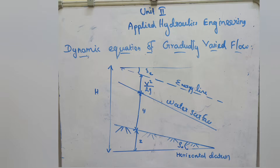The flow direction is in the x direction, and the depth of the flow decreases towards the x direction. Here, z is the height of the bottom of the channel above the datum — the distance from the datum to the bed of the channel. Y is the depth of the flow. S-naught is the bed slope.